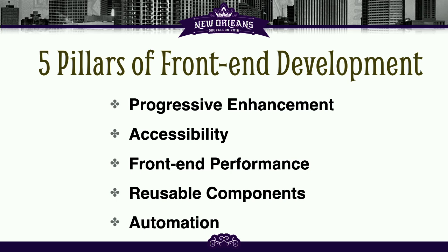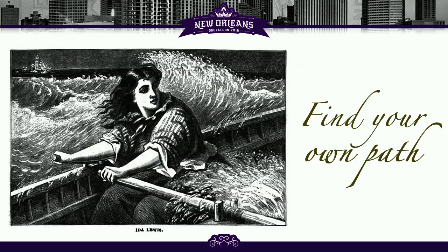So, five pillars of front-end development: progressive enhancement, accessibility, performance, reusable components, and automation. The first three are things we've been doing traditionally for years and years, decades even. The second two are the new stuff. How do you go about learning all these things and deciding what's next? I think it's sort of important that you find your own path — don't have somebody dictate to you what's the first, second, third thing you have to do next.